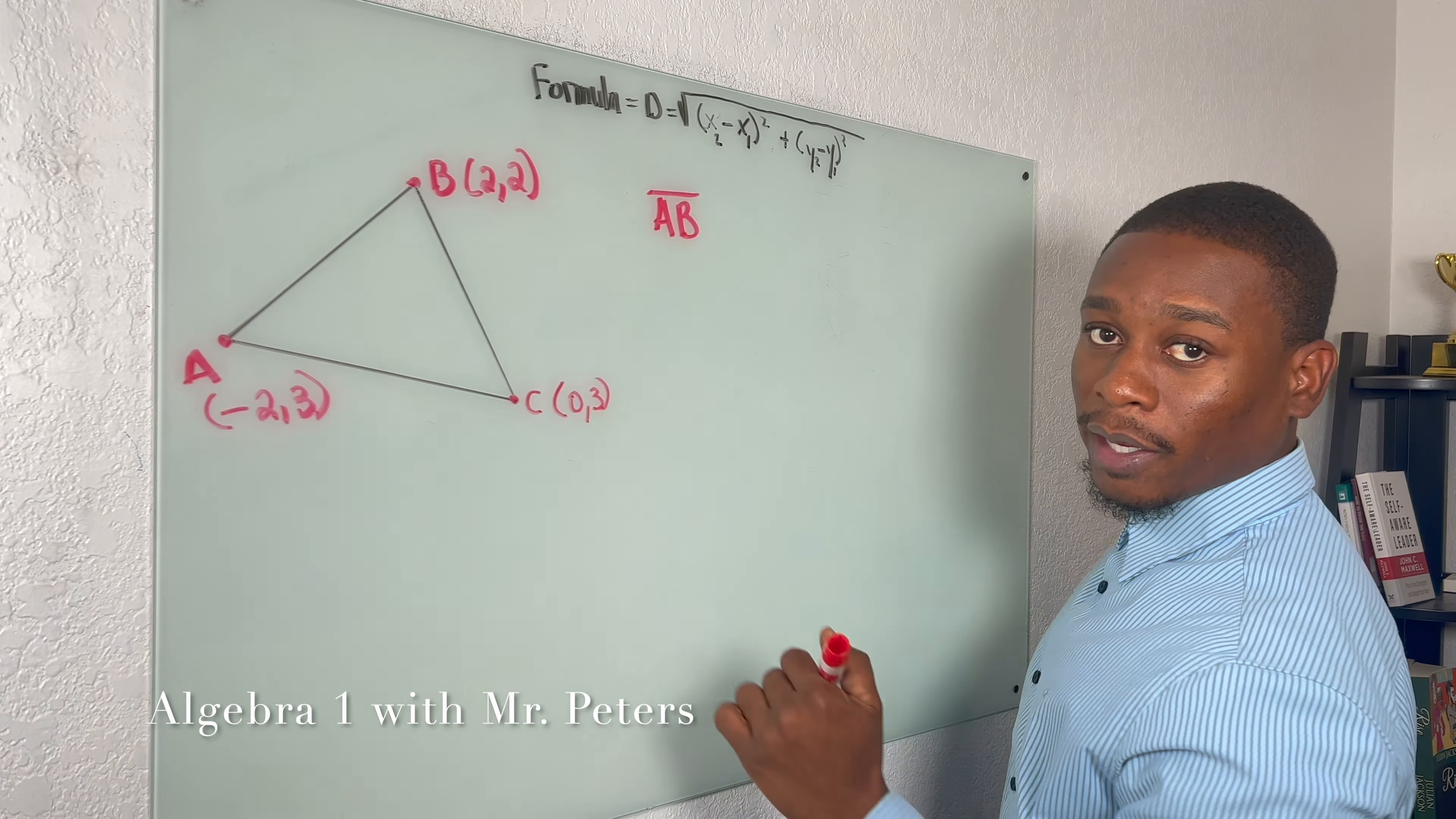Now we're going to move on to the second side length, which is B to C. So with B to C now, let's just be mindful that our coordinates change, and that's supposed to be negative. I don't know why I keep forgetting. So when we go to B to C now, just remember, points change. So just please be aware.